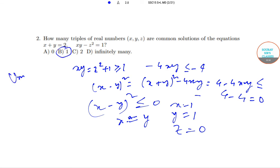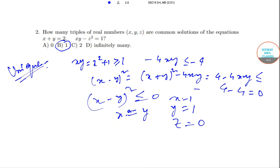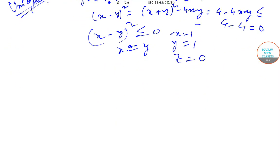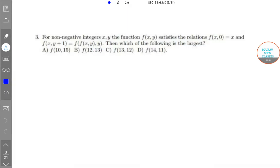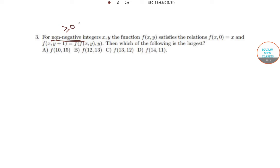Now we go to question number 3. These ones are very easy and short questions. For non-negative integers—remember that non-negative doesn't mean positive, non-negative means greater than or equal to 0, and positive means only greater than 0—the function satisfies the relation f(x, 0) = x and f(x, y+1) = f(f(x, y), y).